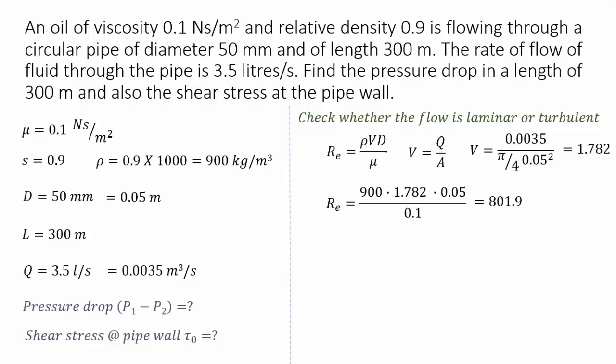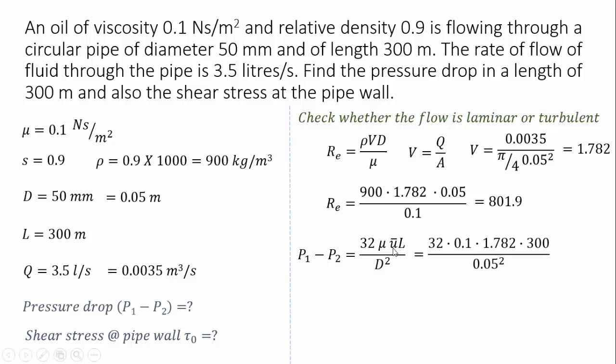Since the flow is laminar, we can use the Hagen-Poiseuille equation for calculating the pressure drop. If you are new to the Hagen-Poiseuille equation, watch the video suggested here. The equation involves viscosity μ, average velocity V (which is what we calculated), and the pipe length of 300 meters and diameter of 0.05 m. Substituting all these values gives a pressure drop of 684,288 N/m². This is the pressure drop experienced in the pipe of diameter 50 mm and length 300 meters.